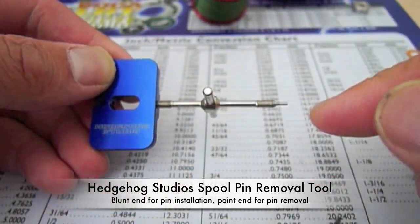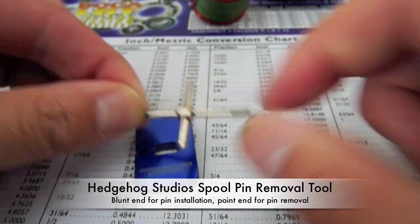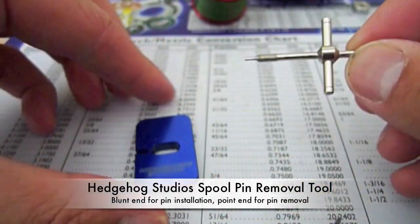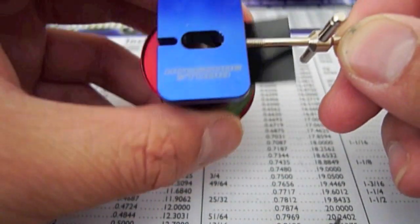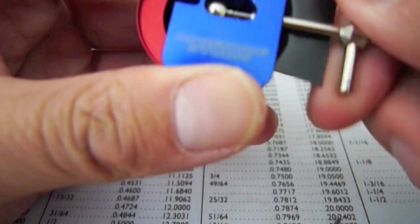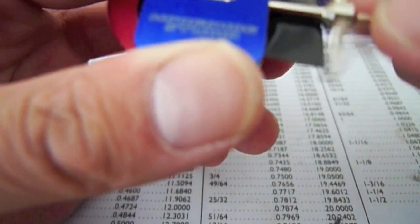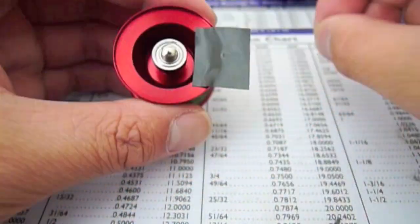There are two ends to the spool pin removal tool. There's a pointy end and a blunt end. The pointy end right here is for spool pin removal. The blunt end is for installation. I'm going to put the spool pin removal tool over and start turning.